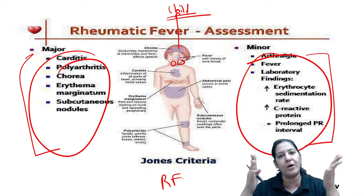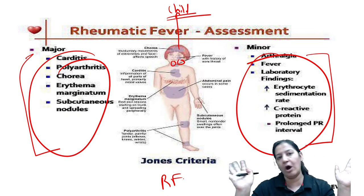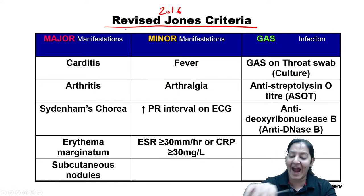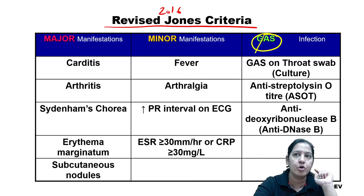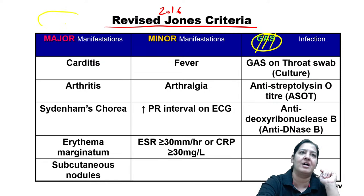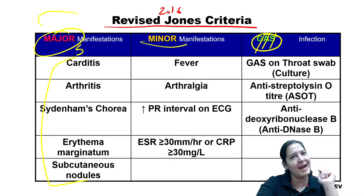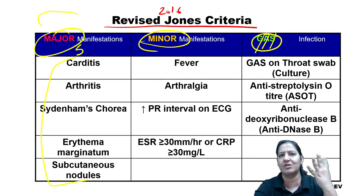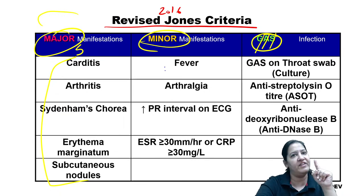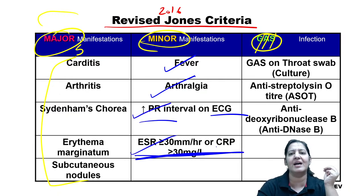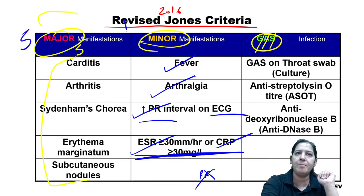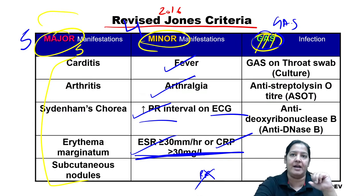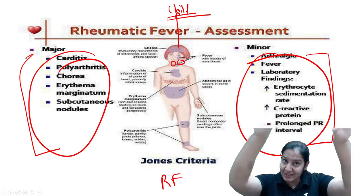The GAS criteria must be fulfilled because you must prove the child had a streptococcal infection before the rheumatic fever manifestations appeared. Without proof of bacterial infection, you cannot label it as rheumatic fever. To prove GAS infection: take a throat swab and do culture — if Group A beta-streptococcus grows, it is proven.